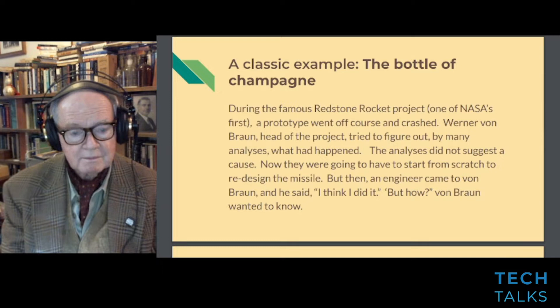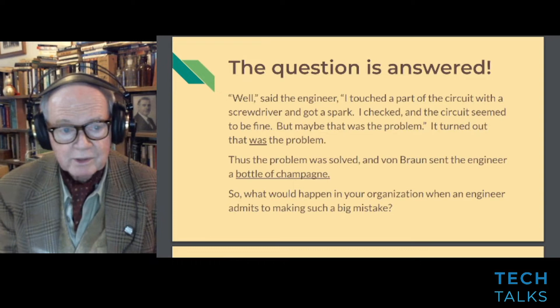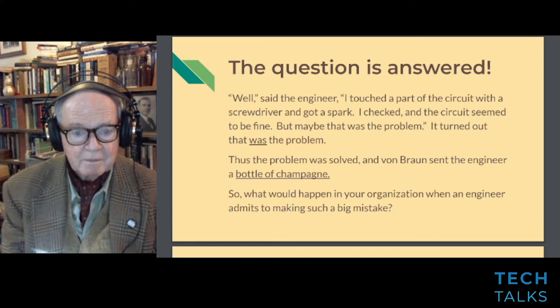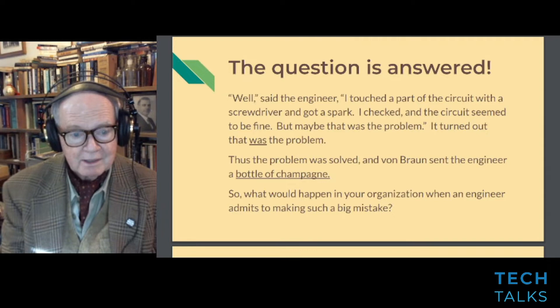The engineer said he had touched a part of the circuit with a screwdriver and got a spark. He checked and the circuit seemed to be fine — but maybe that was the problem. It turned out that was the problem. The problem was solved, and von Braun sent the engineer a bottle of champagne. What would happen in your organization when an engineer admits to making such a big mistake?